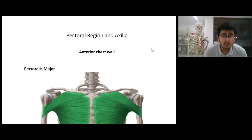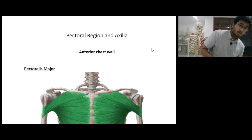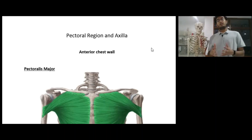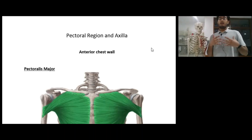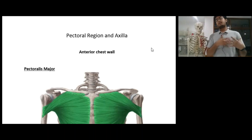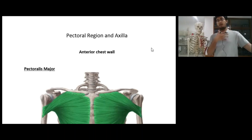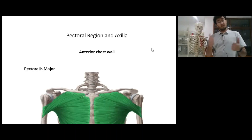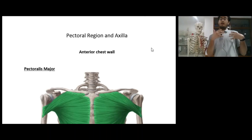Hello everyone, so today we will be studying about the pectoral region and the axilla. Usually this topic comes under the module which is musculoskeletal system, but this is a very high-end topic. The pectoral region forms an important area, and it's still important to study about the axilla since most of the structures traversing from the neck region are going down the axilla into our arm. So it's really important to know what forms the boundaries of the axilla and what structures are present inside the axilla.